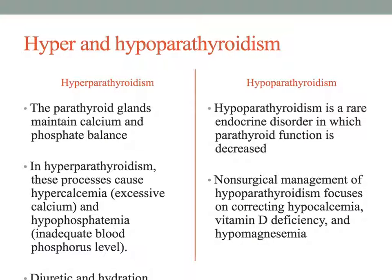Treatment for hyperparathyroidism typically involves removal of the parathyroid gland. Hypoparathyroidism occurs when there is a decreased level of parathyroid hormone in the bloodstream, resulting in decreased serum calcium. To summarize: too little parathyroid hormone means too little calcium; too much parathyroid hormone means too much calcium. Non-surgical management of both disorders focuses on correcting calcium levels. In hypoparathyroidism, patients will need calcium supplements and sometimes IV calcium, as well as vitamin D supplements to assist with absorption and utilization of the calcium.